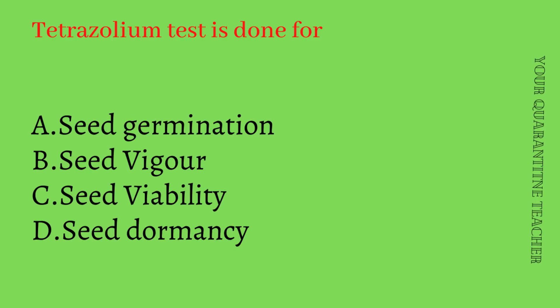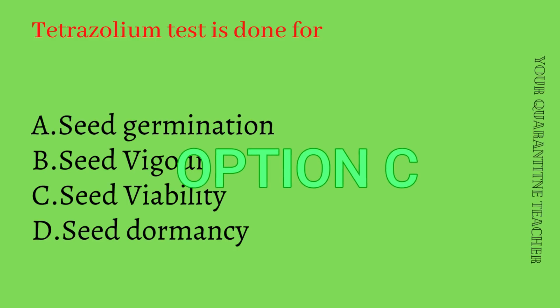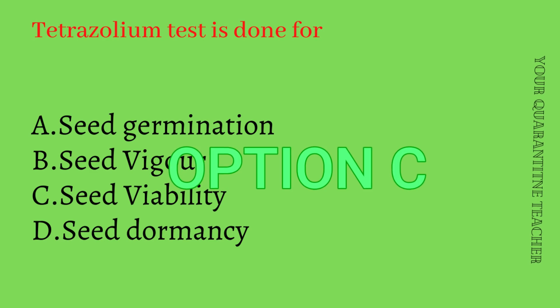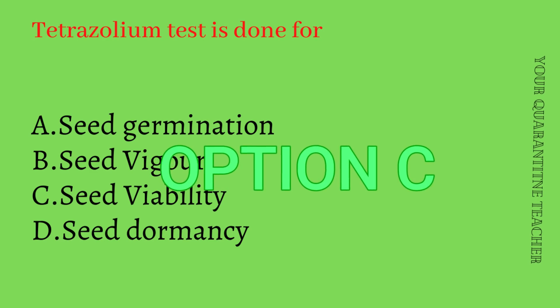Tetrazolium test is done for: Option A Seed germination, Option B Seed Vigor, Option C Seed Viability, Option D Seed Dormancy. Option C Seed Viability is the answer. The tetrazolium test is used to test seed viability.